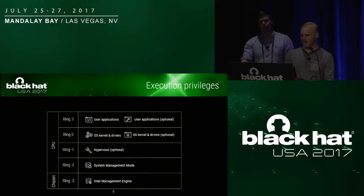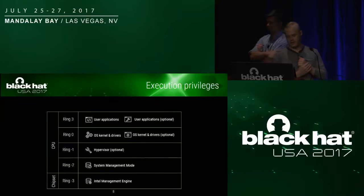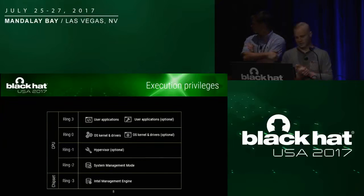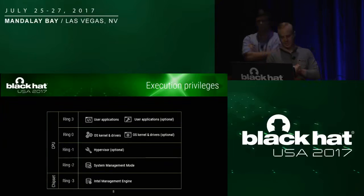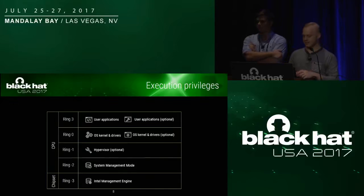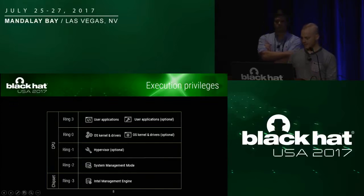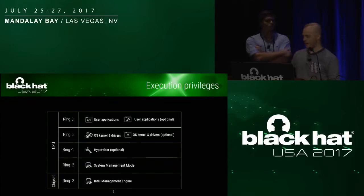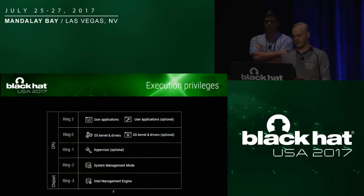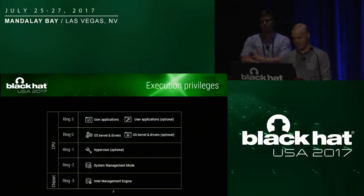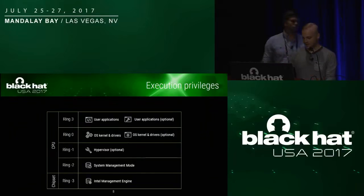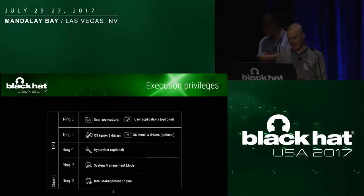Any program code running on the system is executed in one of these CPU protection rings. In ring three, you have user applications that have the least amount of privileges. At ring minus two, we find the System Management Mode, or SMM, which is the most privileged within the CPU. Its code is located in a hidden SMRAM, which is not visible at any other level. However, we were able to gain access to the most powerful execution environment — Intel ME — located at ring minus three. It has even more available access capabilities and memory isolation techniques.